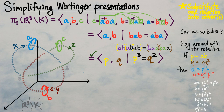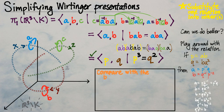This is probably the simplest presentation we're going to get for the knot group of the trefoil. To close, we can relate this group to a group already known from group theory: the dihedral group of symmetries of the equilateral triangle, D6 (sometimes called D3), which is also isomorphic to the symmetric group on three symbols, S3.